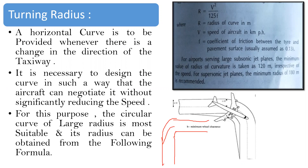Just like when riding a bike around a curve, we reduce speed slightly to manage the turn. Similarly, it is necessary to design the curve such that the aircraft can negotiate it without significantly reducing speed. For this purpose, a circular curve of large radius is most suitable. This radius can be obtained by the following formula.